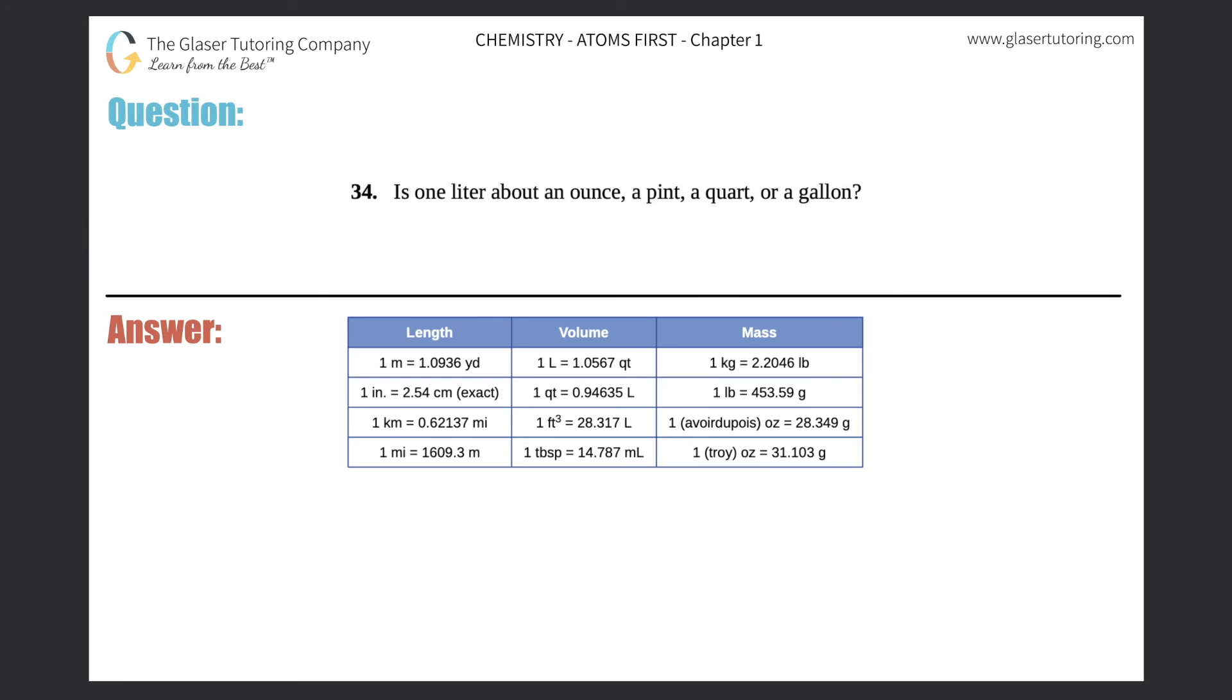Number 34 is one liter about an ounce, a pint, a quart or a gallon. I gave you this conversion chart that is in your textbook, but the first thing I want to say is that these ounce to pint to quart to gallon are going in increasing size.